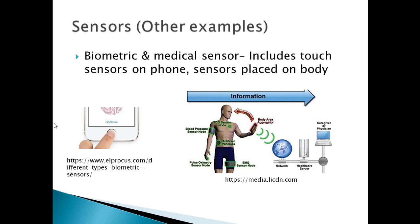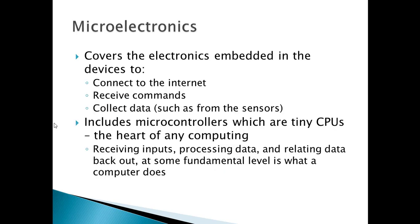Sensors can also be put into watches, contact lenses, fabric, and even your body. Sensors can be embedded in most anything where data needs to be collected. The third layer covers the electronics embedded in the devices to connect to the Internet, receive commands, collect data such as the data from the sensors, and communicate data back to the Internet.